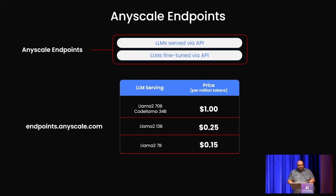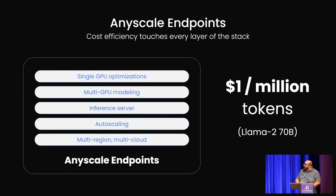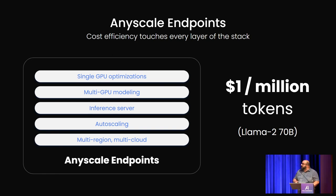We serve LLMs for very good prices — open models for very cost-effective prices, so $1 per million tokens. That is not a Silicon Valley subsidy number; we are still in the red with these numbers because we optimize it a lot. We also allow you to fine-tune those APIs. We take the entire stack from the GPU up through PyTorch and everything else to clouds, and we optimize the hell out of it.